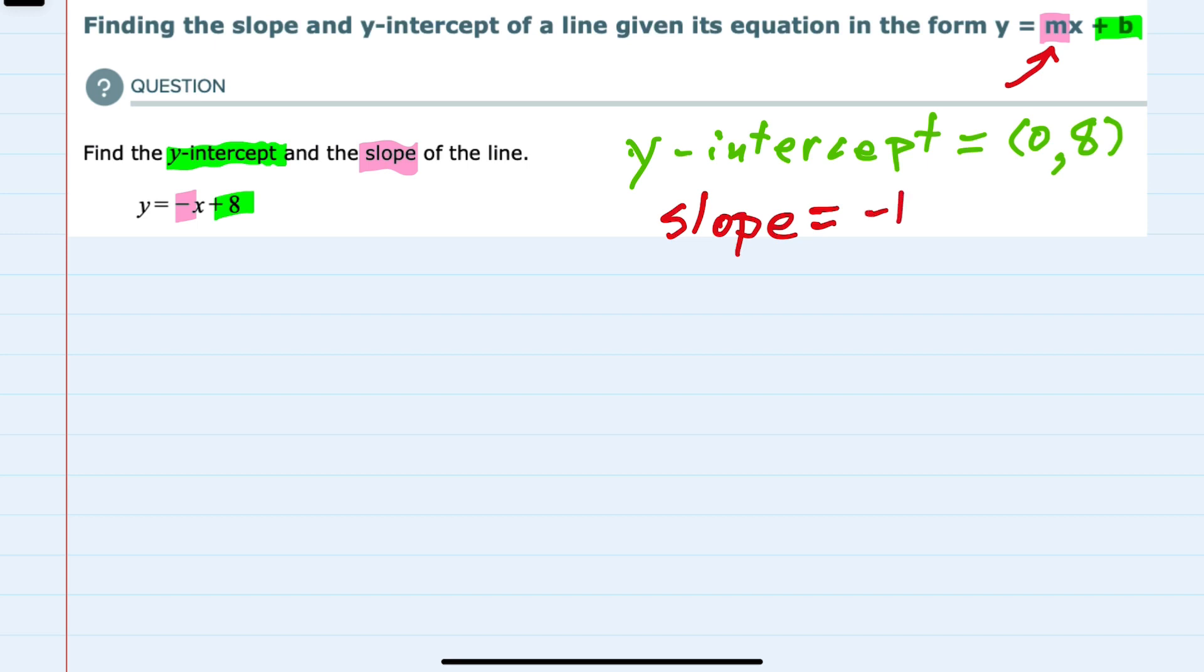And we can see here that finding the y-intercept and slope is straightforward when we have slope-intercept form.